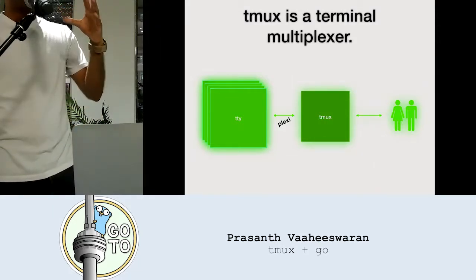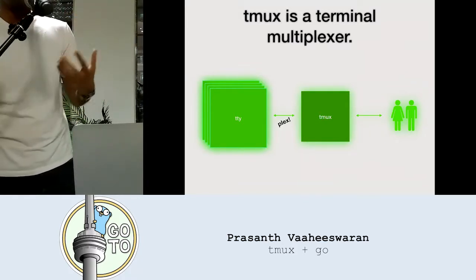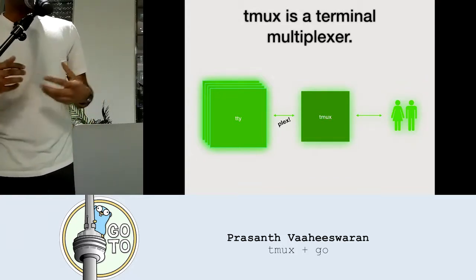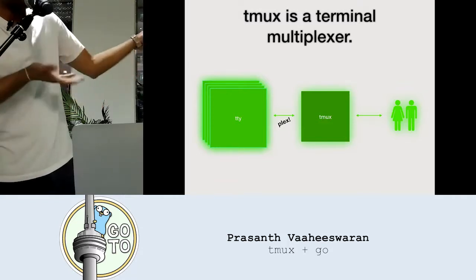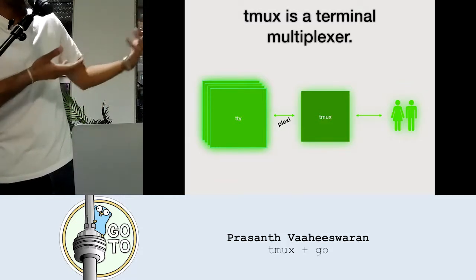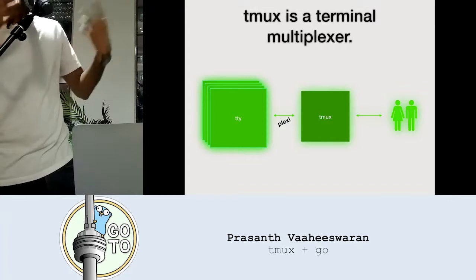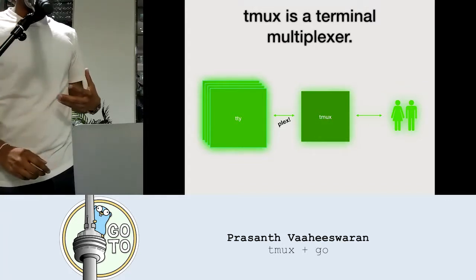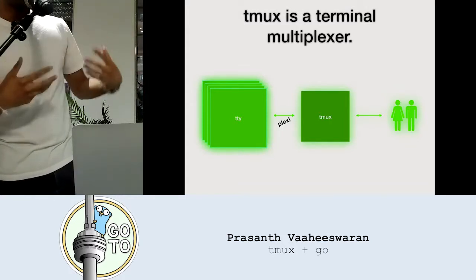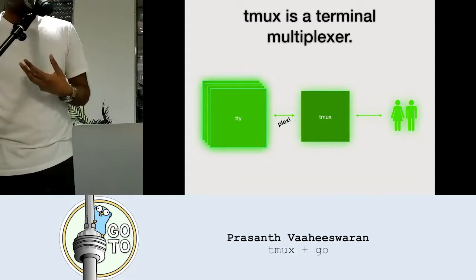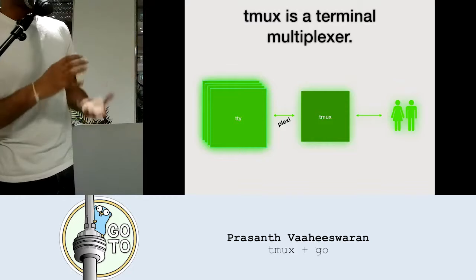Before, they would use punch cards to get information in and printouts to get output. Then they evolved into actual CRT displays, which had a screen for output and the keyboard as input. The name TTY is a little misleading — really it's just a terminal. The multiplexer part means you can manage a whole bunch of these sessions, and I'll go into why I think that's one of the stronger suits.